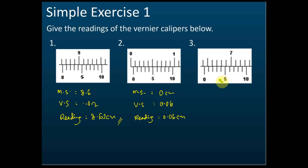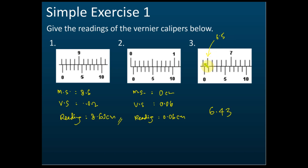Now this time don't tell me main scale and vernier scale separately — straight away tell me the reading for this one. 6.43 — yes, that's correct! Because 6.5 is here, so this is 6.4, and the vernier scale reading is 3 — that is 0.03 — so 6.43 cm.